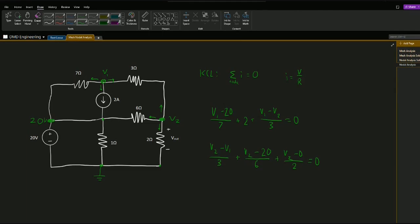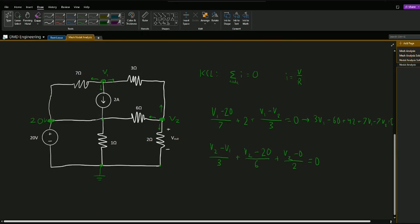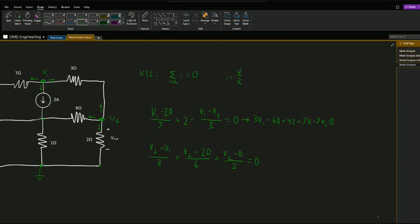Now I'm going to go ahead and simplify these two equations a little bit so there's not fractions. For this one I'll multiply everything by 7 times 3 is 21, so I'm going to get 3 v1 minus 60 plus 42 plus 7 v1 minus 7 v2 equals 0. Give myself a little more room here. If we do a similar thing down here I'll multiply everything by the least common denominator, here it would be 12, so we'll get 4 v2 minus 4 v1 plus 2 v2 minus 40 plus 6 v2 is equal to 0.